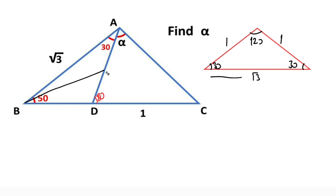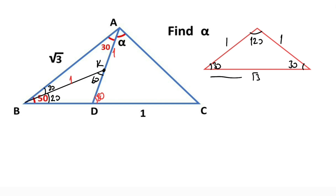Let's go to the question. If we create an isosceles triangle like this, this angle must be equal to 60 degrees. Let's call this point K. Then 20 degrees are left here, and this length and this length must be equal to one unit.